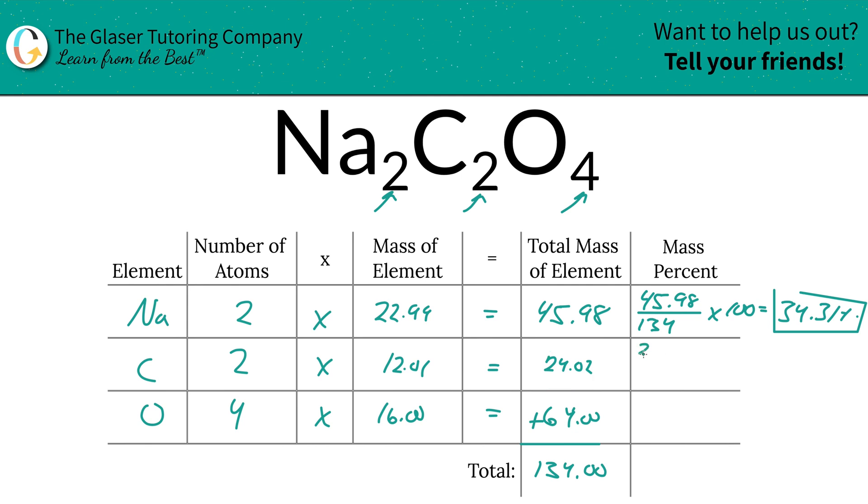Next, carbon. So 24.02 divided by 134 times 100 to find the total percent of carbon here is going to be 17.93%. That's the percent of carbon.